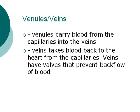The last two types of blood vessels are the venules and veins. The venules carry blood from the capillaries into the veins. And the veins, completing the circuit, take the blood back to the heart. Veins have little valves inside to prevent blood from back-flowing through the veins, which solves the problem of gravity when pumping blood up from the body to the heart.